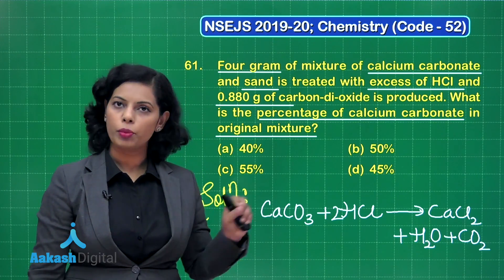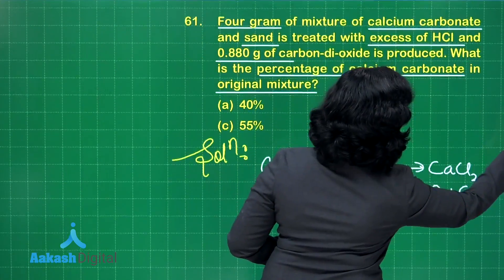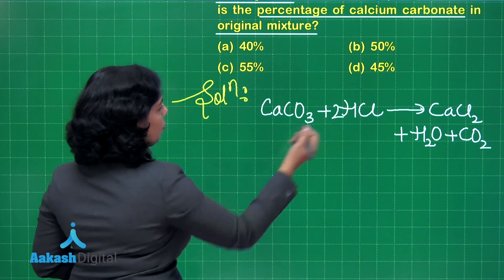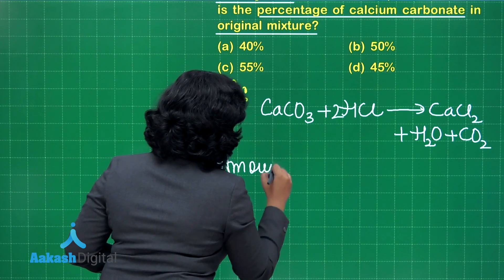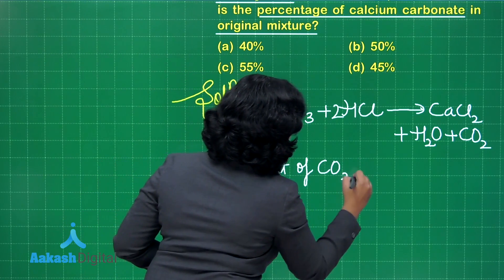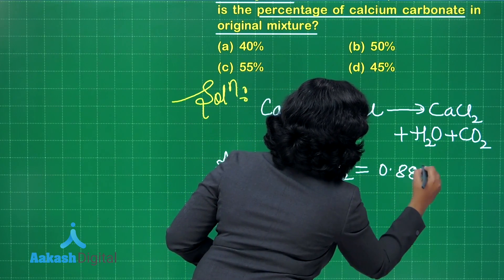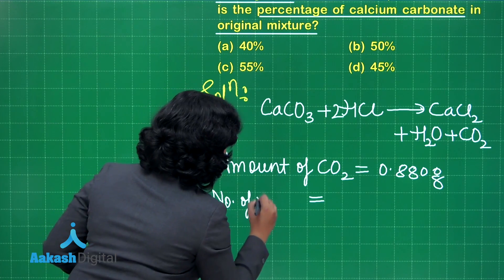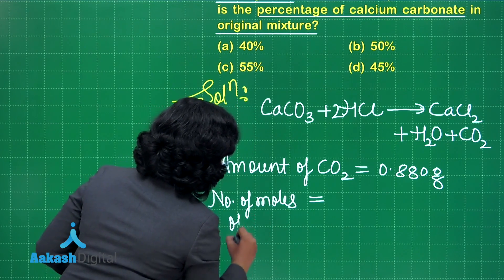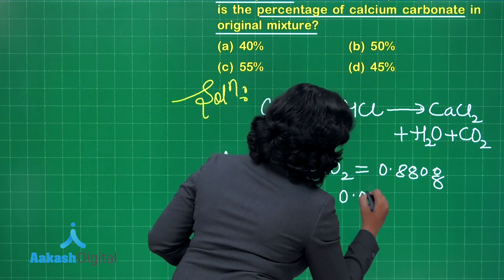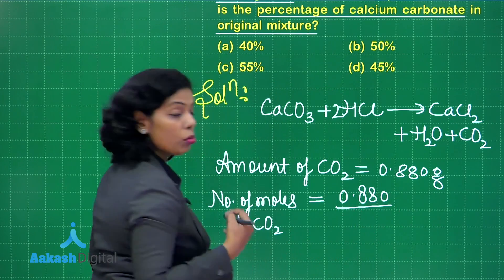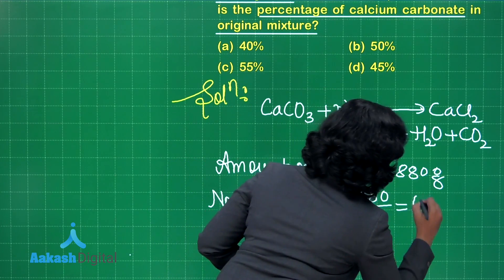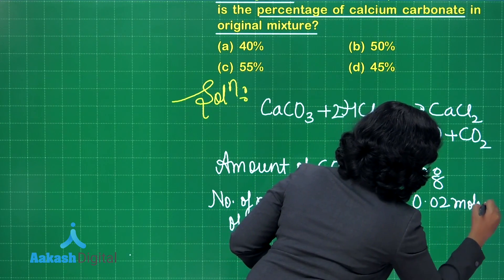With the help of this reaction, we will solve this question to find the percentage of calcium carbonate. If we look at the amount of CO₂ — 0.880 grams — and convert it to moles: number of moles of CO₂ equals given mass divided by molar mass. The molar mass of carbon dioxide is 44 grams per mole, so it becomes 0.02 moles.